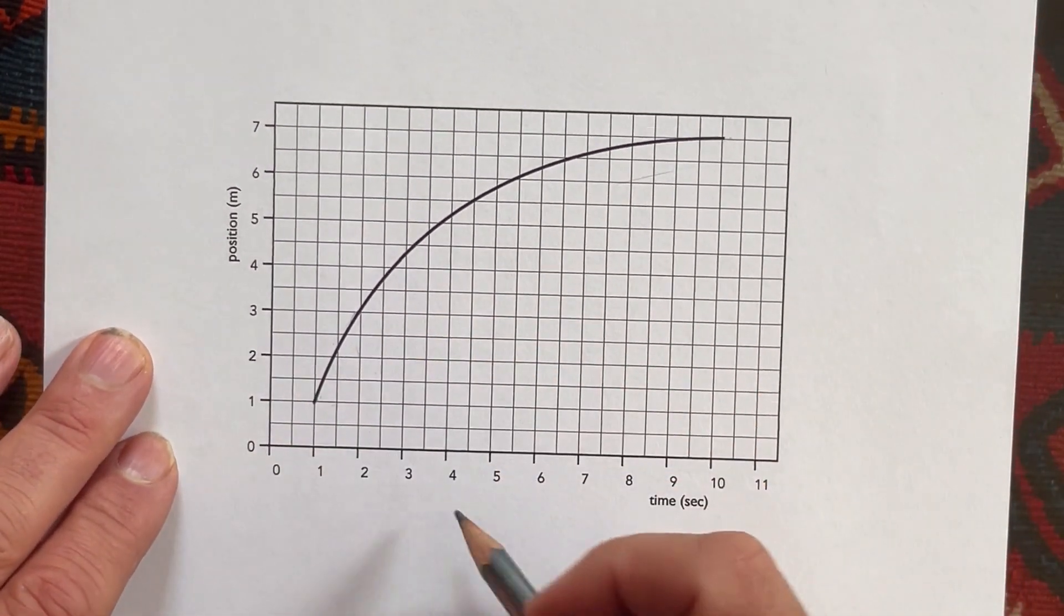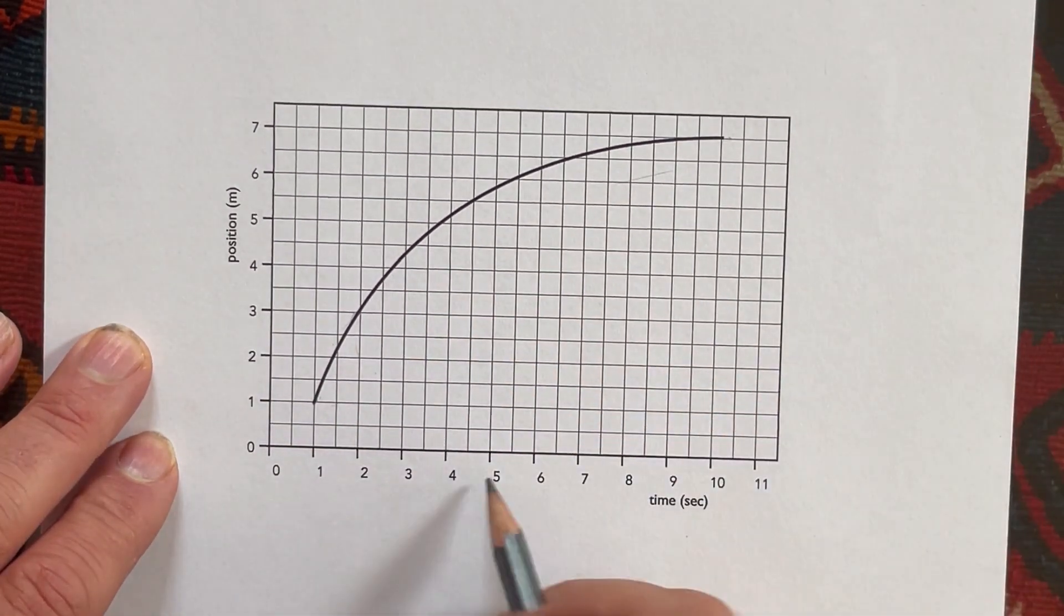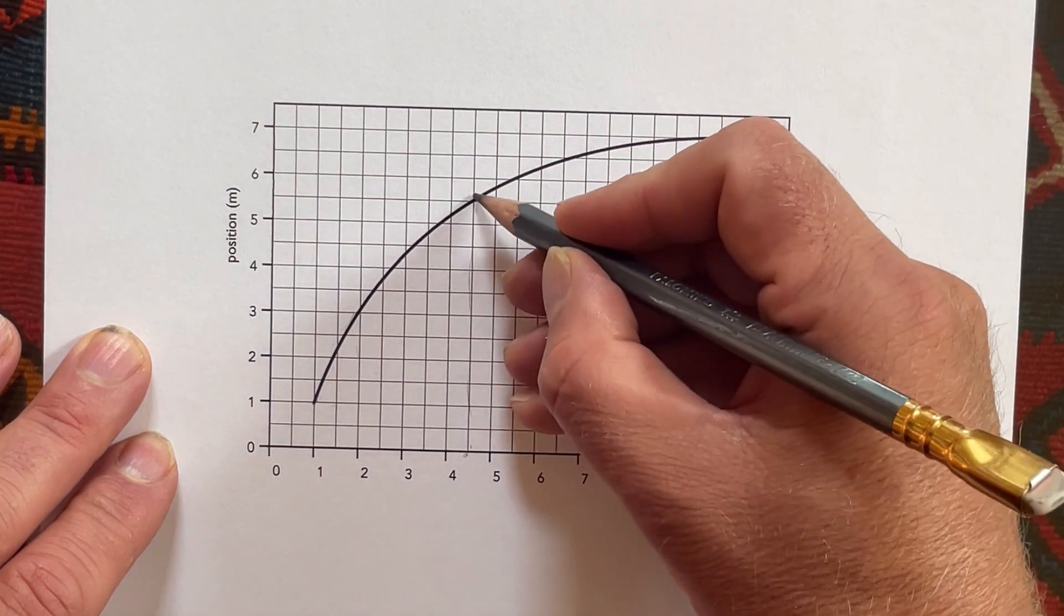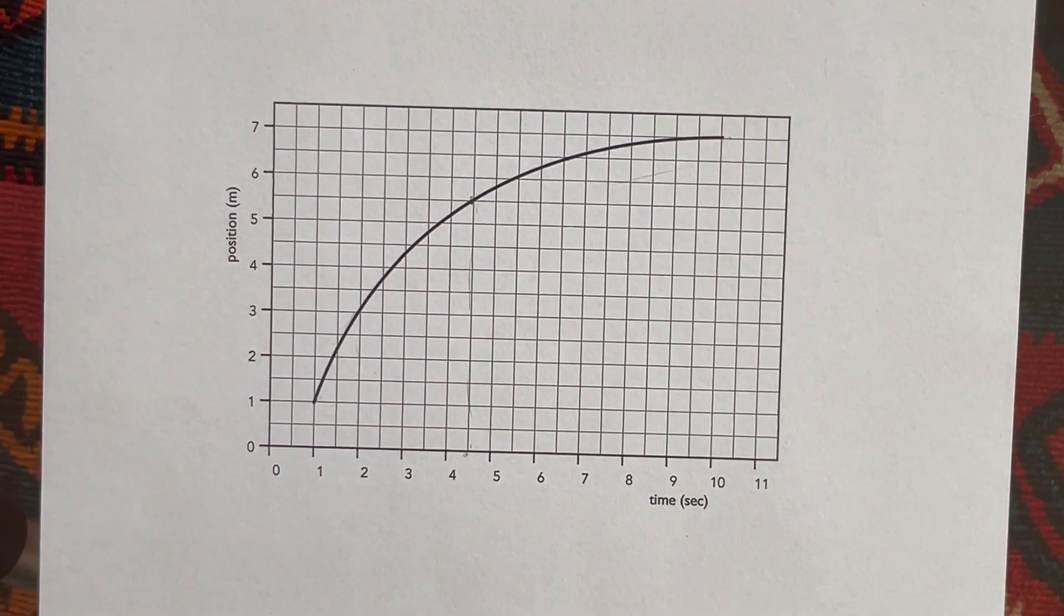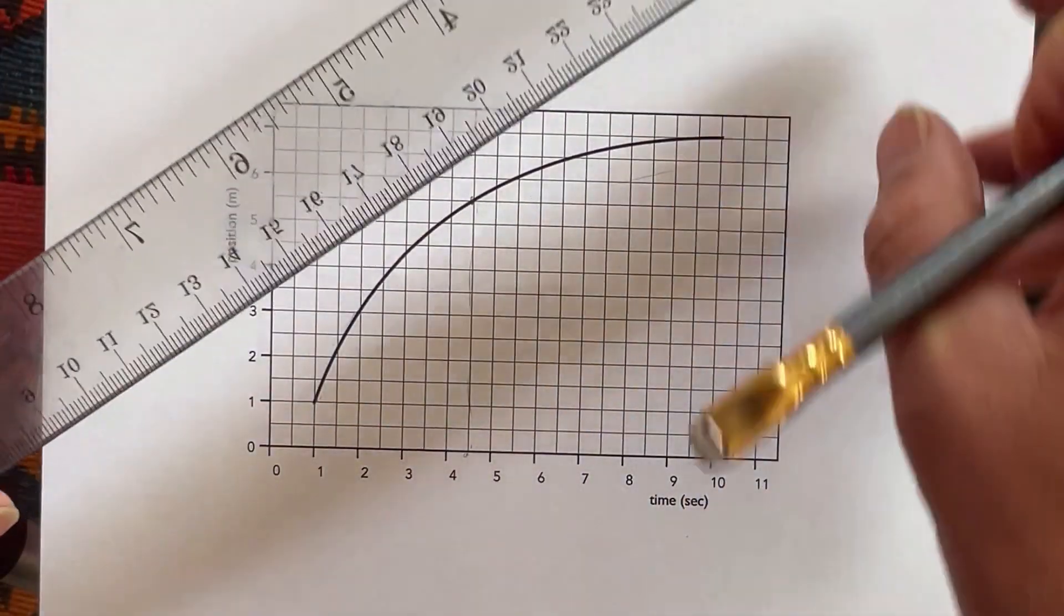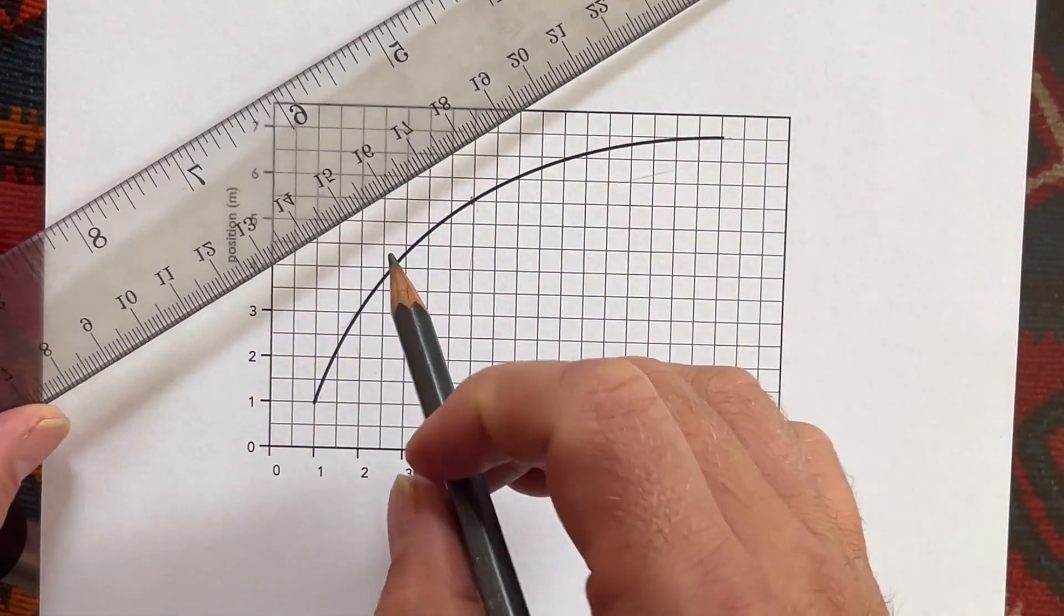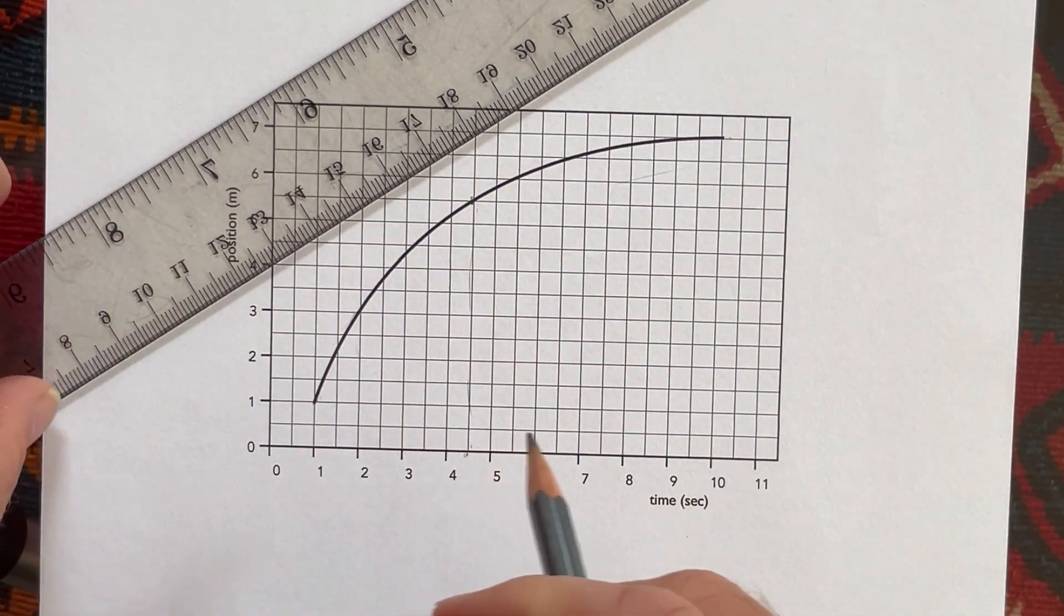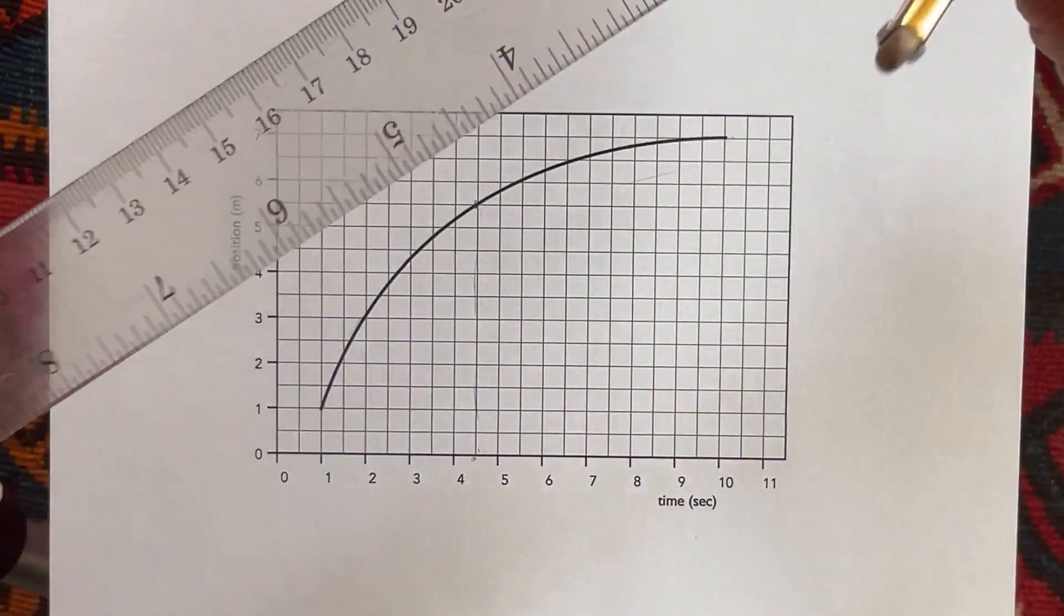So let's say we want to find the slope here at the 4½ second mark, right here. So I'm going to go up from 4½ seconds and I'm going to try to find the slope right there. What I'm going to do is I'm going to take a ruler and I'm going to draw a tangent line right at that point. One suggestion I have with a tangent line, first of all, it doesn't have to be a ruler with numbers. It can be any straight object, straight edge.